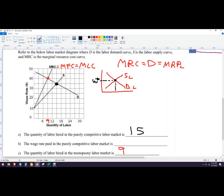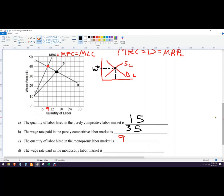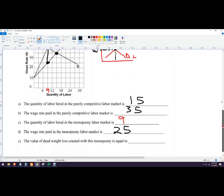And then the wage rate paid to the purely competitive labor market would just be halfway there. It's $35. And then if they have a monopsony, they're going to hire nine workers. And then the wage rate paid in the monopsony labor market, we're going to follow that down to here. So this is the minimum wage I need to pay to get nine workers to show up. So that would be $25. So under monopsony, the workers are going to get paid $10 less, which is bad.